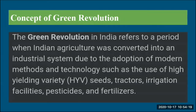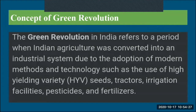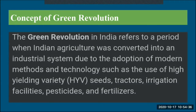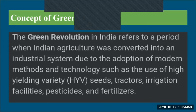The Green Revolution in India refers to a period when Indian agriculture was converted into an industrial system due to the adoption of modern methods and technologies such as the use of high-yielding variety (HYV) seeds, tractors, irrigation facilities, pesticides, and fertilizers. These replaced traditional agricultural methods and helped achieve maximum yield from minimum land.